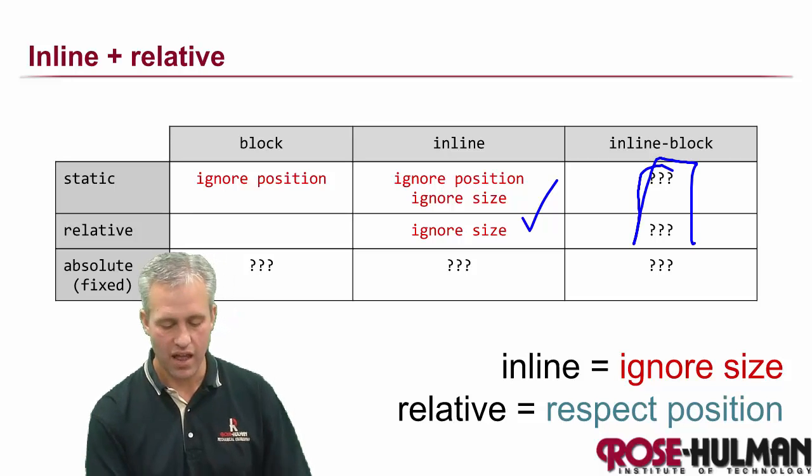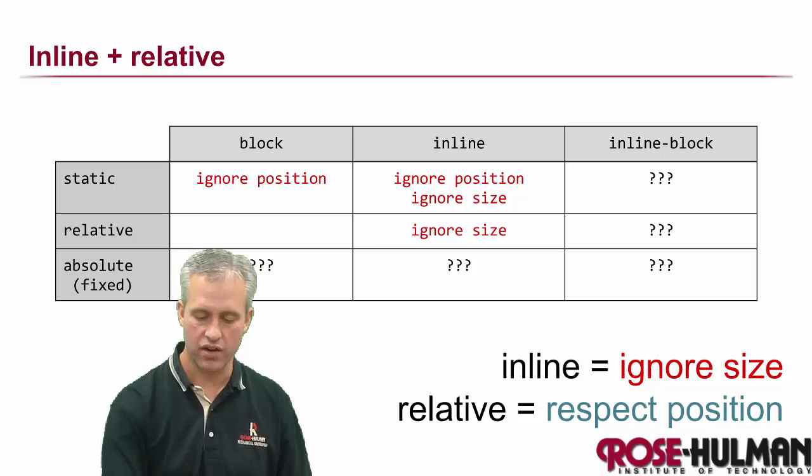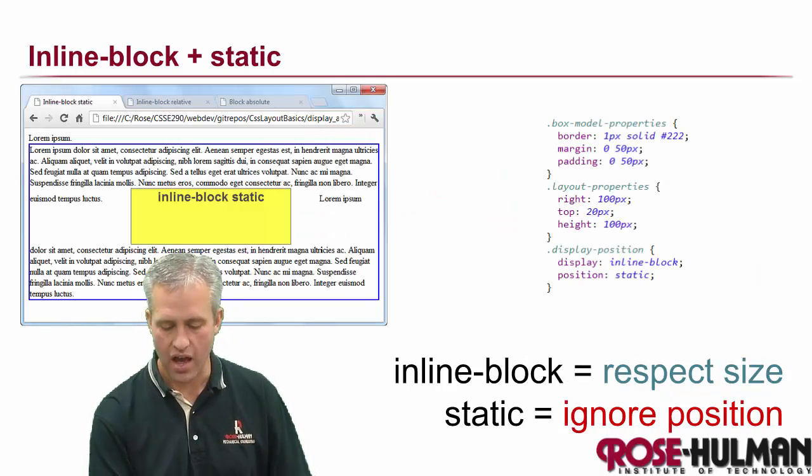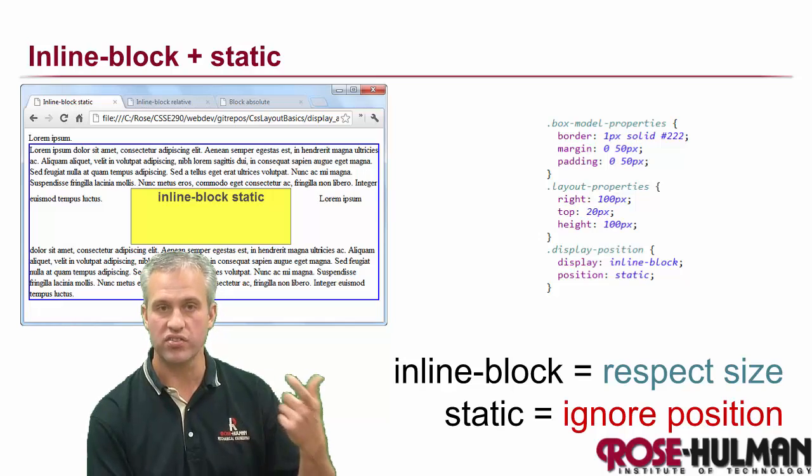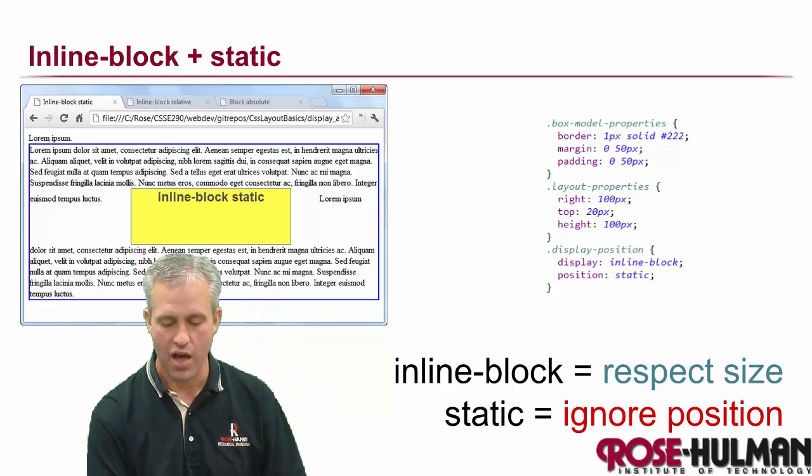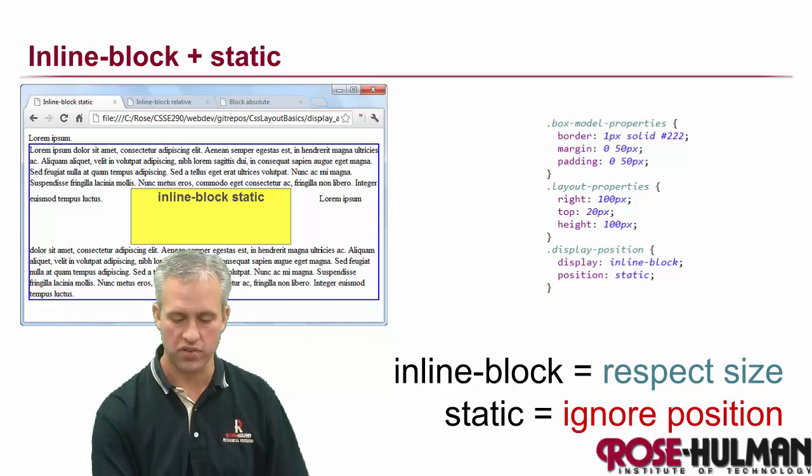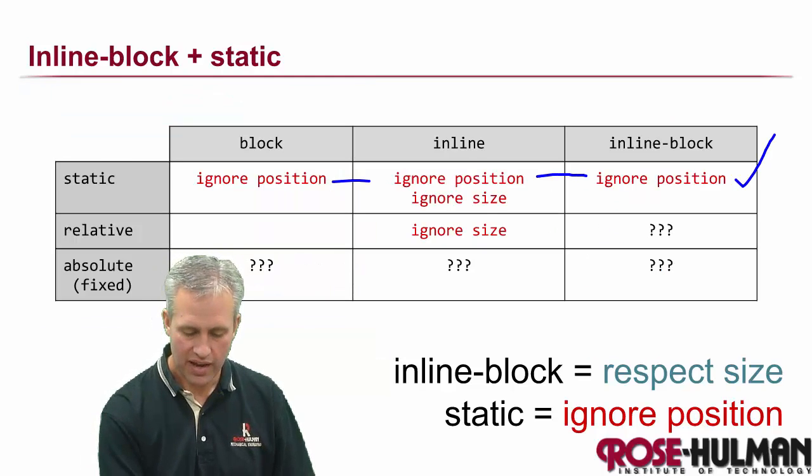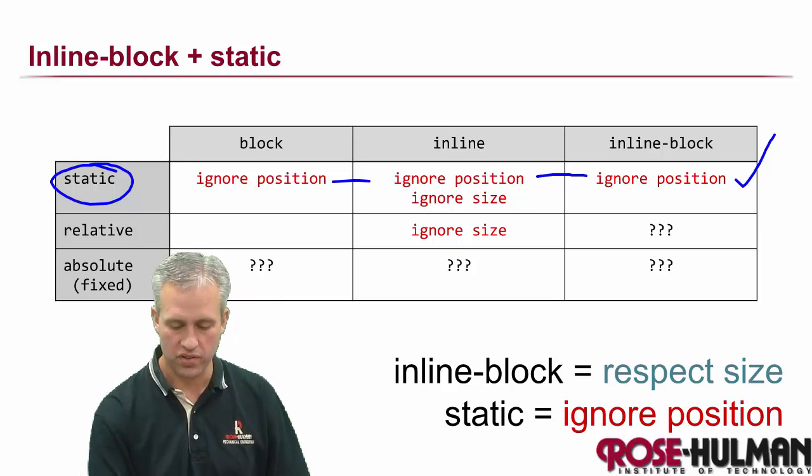Next, let's look at the inline block. So what is it going to do? We'll start moving a little faster. And you can see that if it's static, it respects the size because it's inline block. But because it's static, it ignores position. So we'll fill that one into our table. And I mean, it's not hard to see, right? So anybody that's static has ignore position.